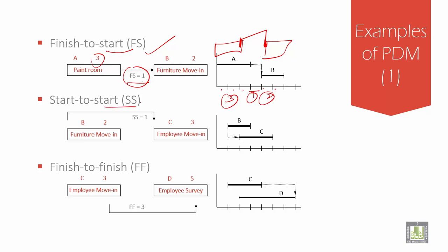Next is start-to-start, beginning to beginning. It is like this, beginning, beginning. This is start, this is start. This is what is shown over here. You have a lag of 1. B is 2. This lag of 1 is shown over here. Then 3 - 1, 2, 3. This is C.